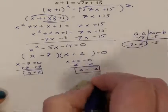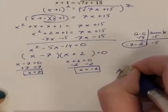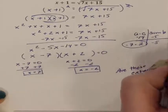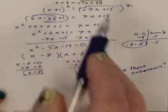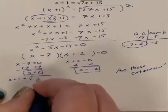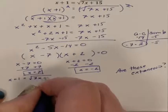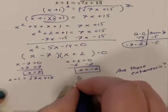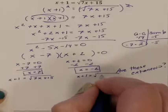But we need to check, are these extraneous? And how do we check them? You literally get to type them into the equation. So we have x plus 1 equaling the square root of 7x plus 15 that we are going to use and check our answers.